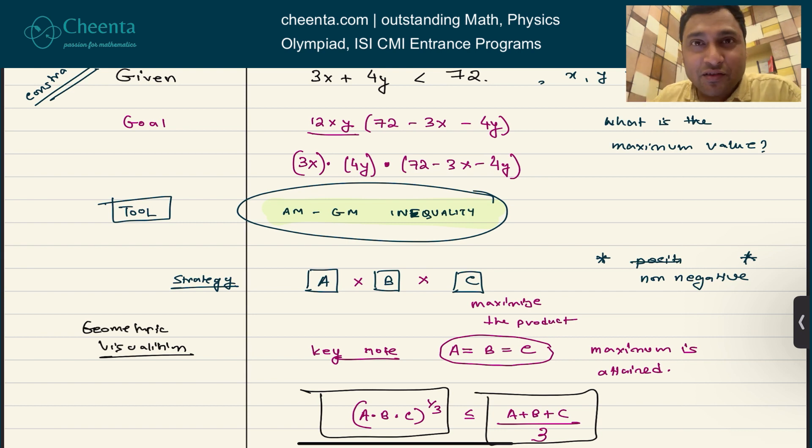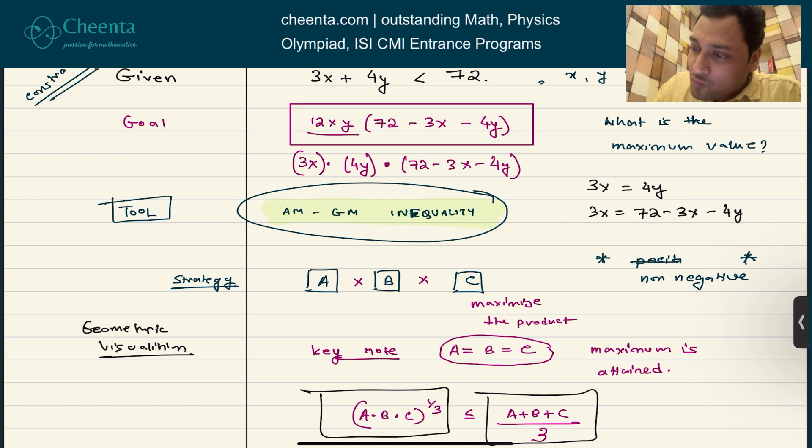Can you tell me what would be the value of X and Y and what would be this maximum value at the end of the day? If you just solve this equation, it's really simple. 3X equals to 4Y. 3X equals to 72 minus 3X minus 4Y and 4Y is equal to 72 minus 3X minus 4Y. All three of them are equal to one another.